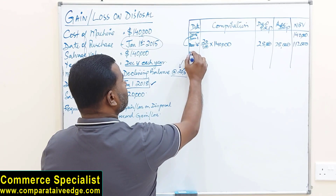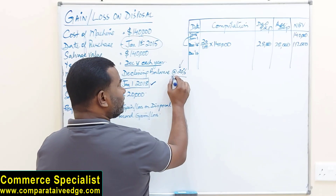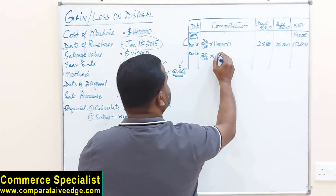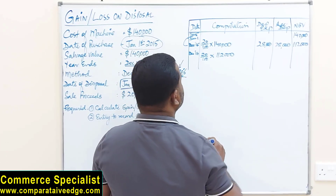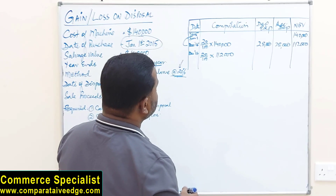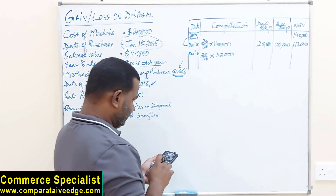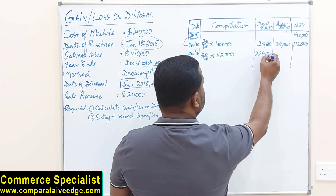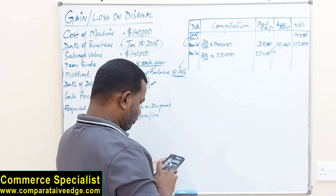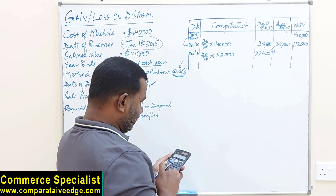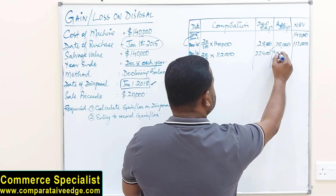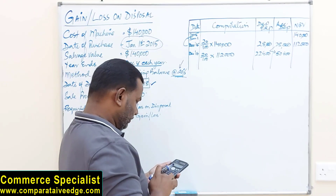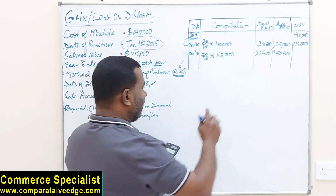Next year, December 31st 2016: 20% is the same — 20/100 — but now it is applied to 112,000. So 20% of 112,000 = 22,400. This is the current year depreciation. Add the two years: 22,400 + 28,000 = accumulated depreciation of 50,400. Subtract 50,400 from 140,000 and you get a net book value of 89,600.